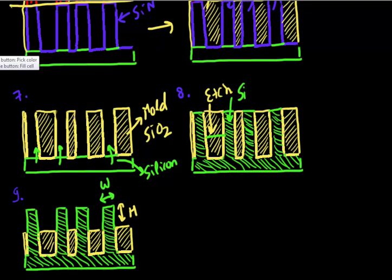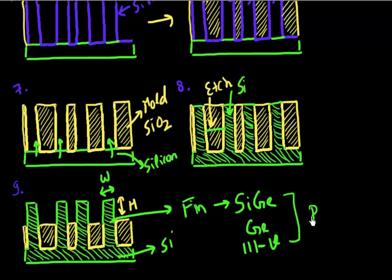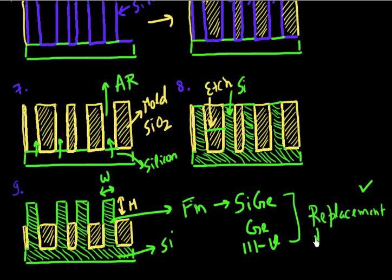This replacement fin approach is more suitable especially when you are trying to grow a different material. You might have a silicon substrate but want to make your fin of a non-silicon material such as silicon germanium, germanium, or a III-V material. In that case the replacement fin approach is more favorable, because it can trap defects into this high aspect ratio structure. You can leverage this process called aspect ratio trapping to trap your defects in this mold.